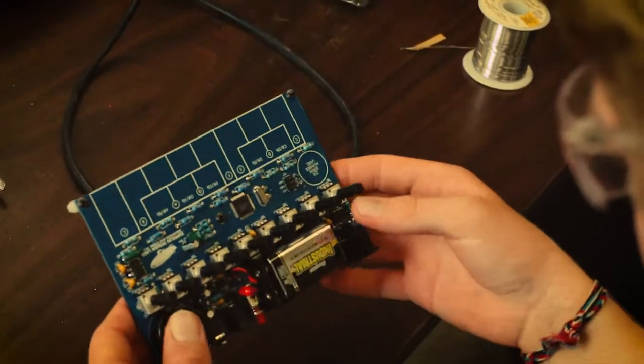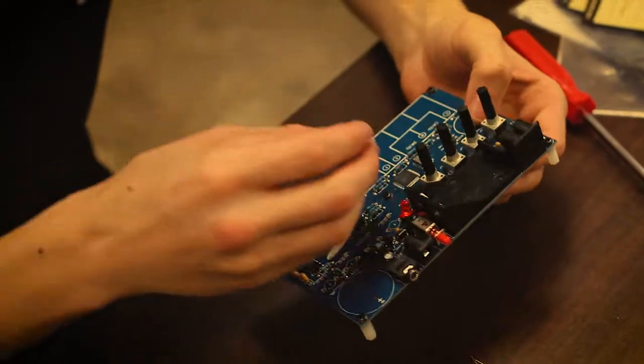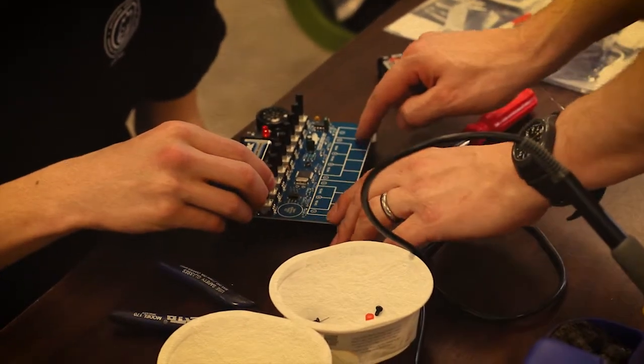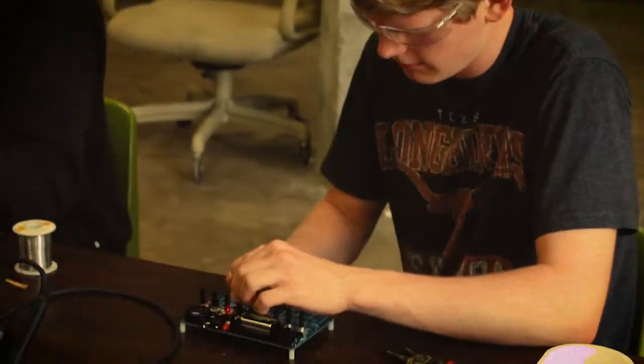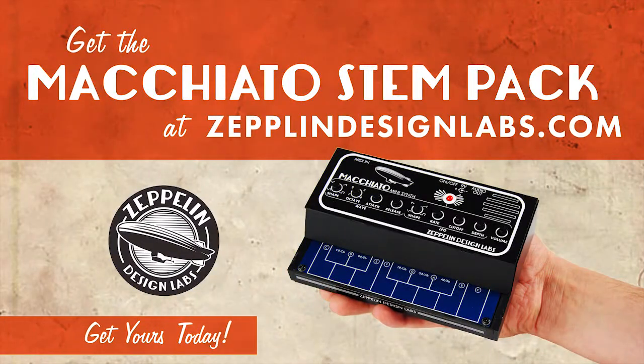The Macchiato needs a 9-volt battery, or you can order your pack with plug-in wall adapters. The Macchiato is a real musical instrument, packed with features and sounds. It is far more functional than most project kits in its price class. Your kids will be jamming in no time. Get the Macchiato Mini Synth STEM Pack online direct from zeppelindesignlabs.com.